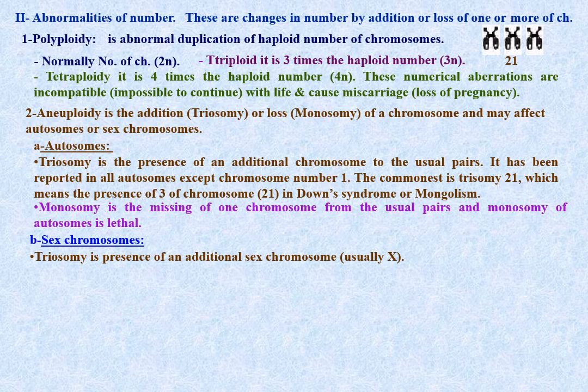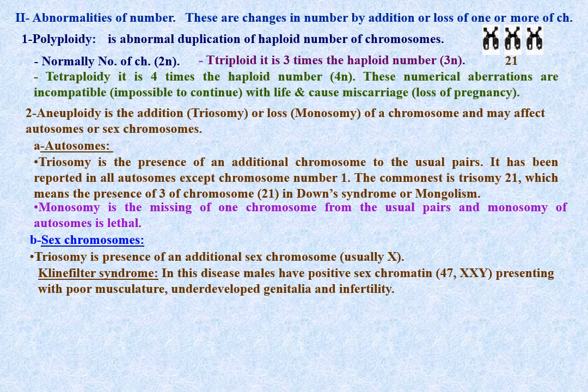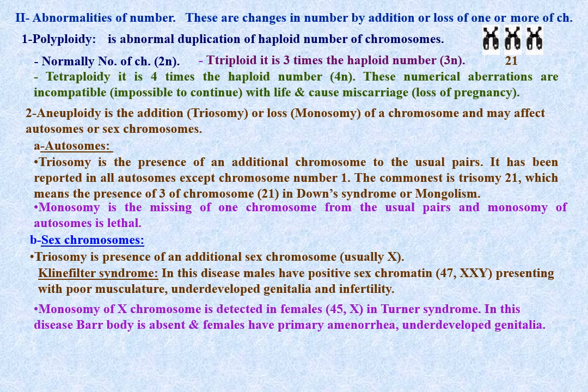Klinefelter syndrome: in this disease, males possess an extra sex chromosome (XXY), making them positive for sex chromatin. Such males show poor musculature, infertility, and are at higher risk for breast cancer. Monosomy of the X chromosome is detected in females who possess 45 chromosomes: 44 autosomes and one X chromosome.